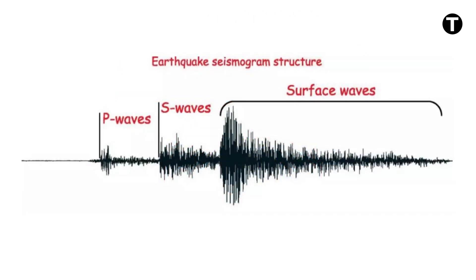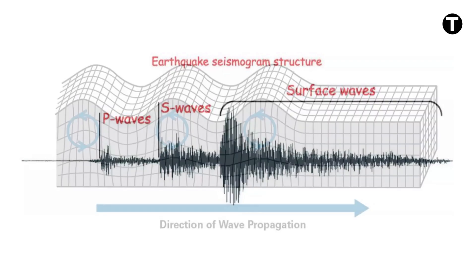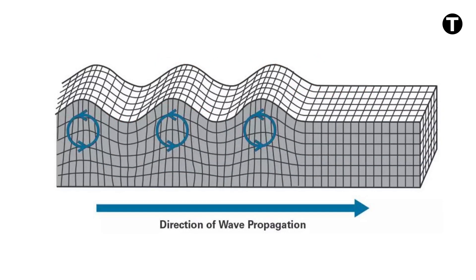Surface waves propagate along the Earth's surface. They travel more slowly than seismic body waves — P-waves and S-waves. They can reach an amplitude of several centimeters in large earthquakes and are usually responsible for the destructive effects of earthquakes. We can distinguish two types of surface waves. Rayleigh waves include both longitudinal and transverse motions that decrease exponentially in amplitude with distance from the surface. They are generated by the interaction of P-waves and S-waves, traveling at around 90% of the velocity of S-waves.